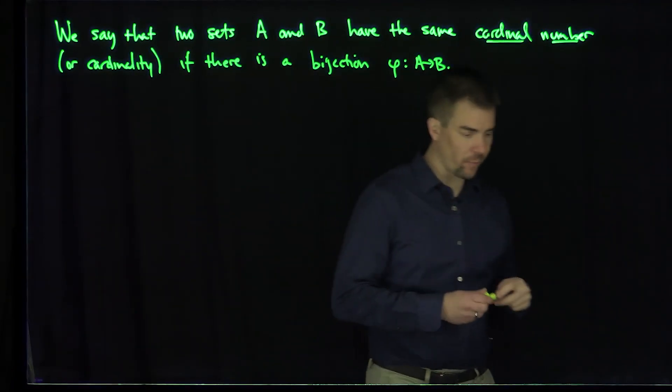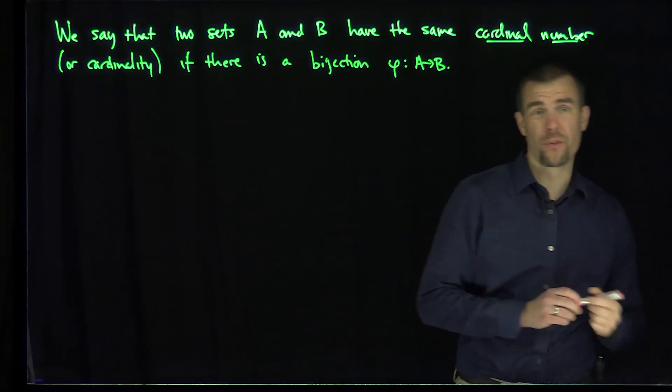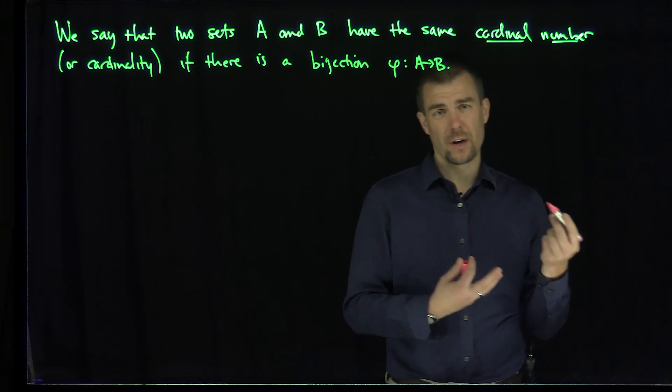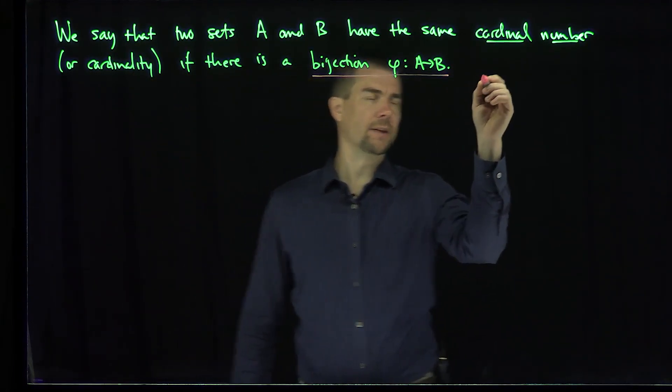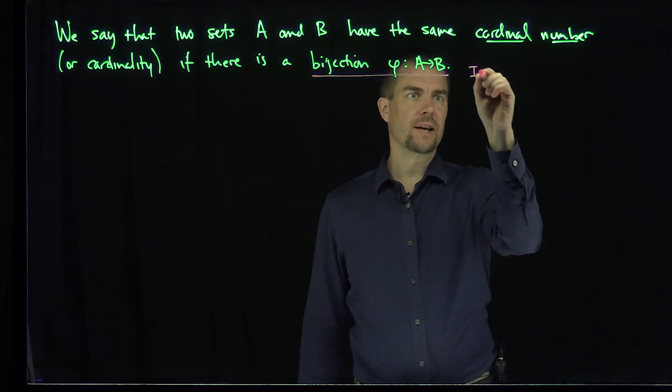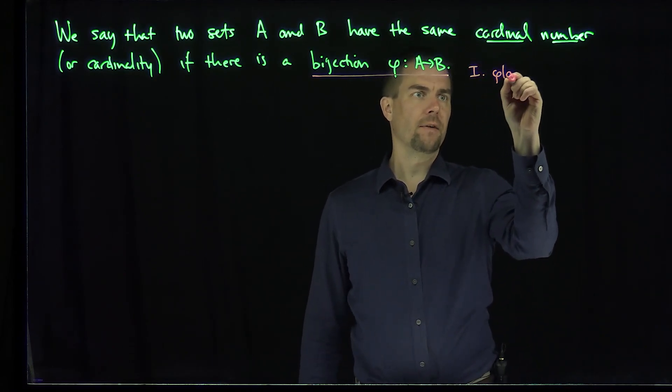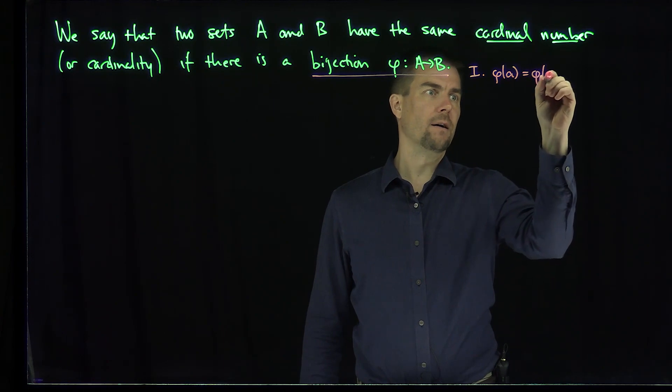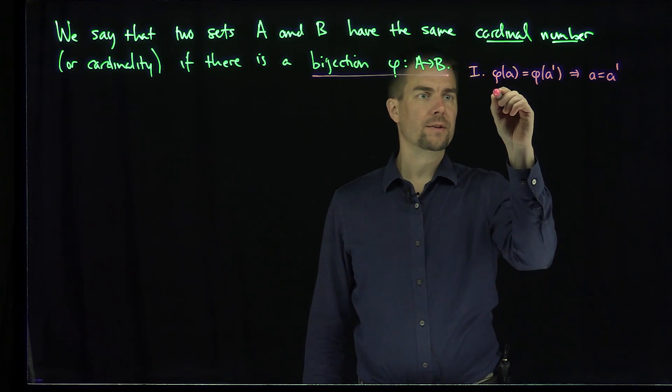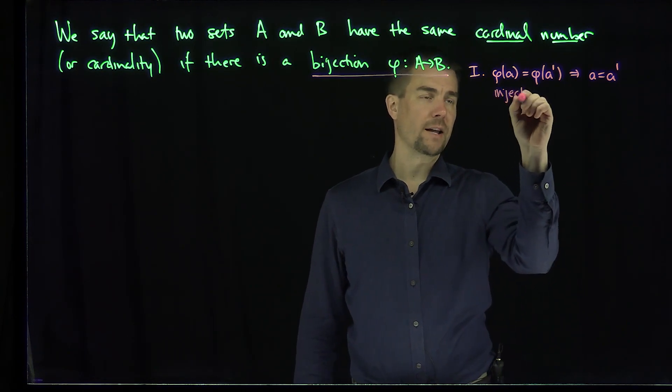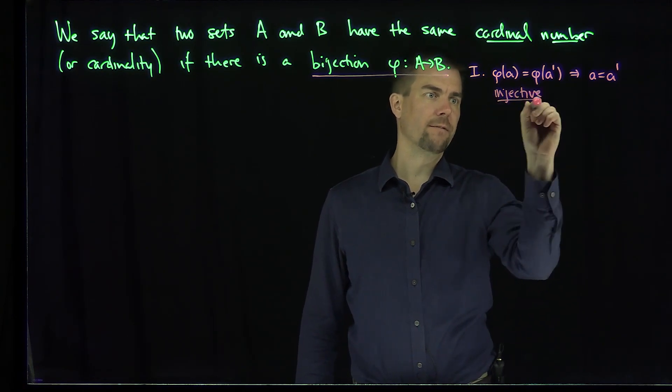Of course, phi being a bijection means two things. It means that phi has to be one-to-one or injective and onto or surjective. The first condition is that if phi of A is equal to phi of A prime, this implies that A is equal to A prime. This is equivalent to the function phi being injective.